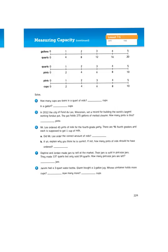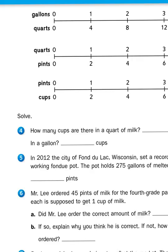At the top of page 229, we see some number lines. Just another way to represent the information that we need for converting units. And as you can see, there are 2 cups for every pint and 2 pints for every quart. Now they ask us, how many cups are there in a quart of milk?